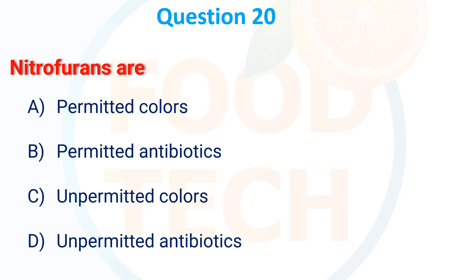Nitrofurans is a: A. Permitted color, B. Permitted antibiotic, C. Unpermitted color, D. Unpermitted antibiotic. The correct answer is unpermitted antibiotic.